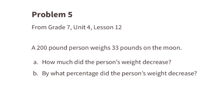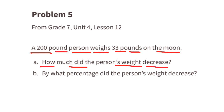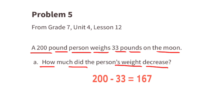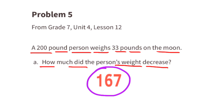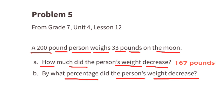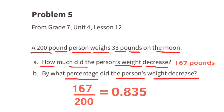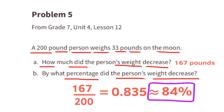Problem number 5, from 7th grade Unit 4 Lesson 12. A 200-pound person weighs 33 pounds on the moon. A: How much did the person's weight decrease? To find the difference, we subtract: 200 minus 33 is 167. The person's weight decreased 167 pounds. B: By what percentage did the person's weight decrease? The amount decreased divided by the original amount: 167 divided by 200 is 0.835, which is approximately 84%. The person's weight decreased approximately 84%.